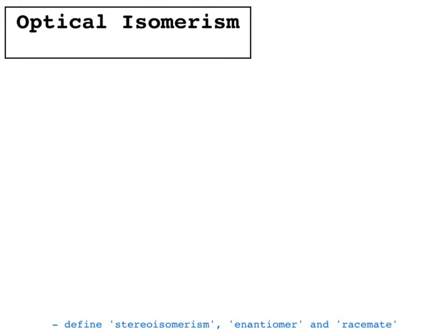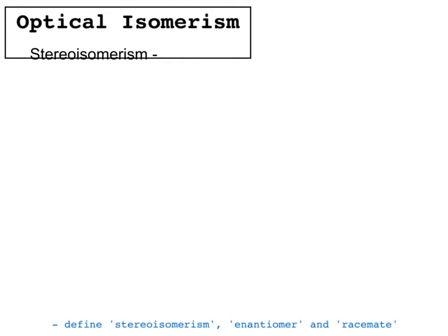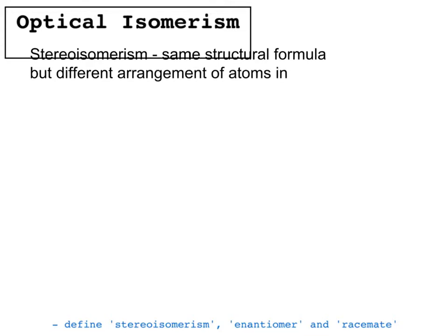First, some definitions. The first one is stereoisomerism. If you remember back in Chem 1, you learned about structural isomerism — that is the same molecular formula but a different structural formula. Here, stereoisomerism is the same structural formula but a different arrangement of atoms in space.